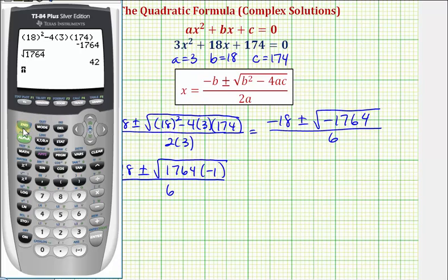We should be able to enter the square root of negative 1764, and it should show us the 42i. So negative 1764, enter, and notice how it does.